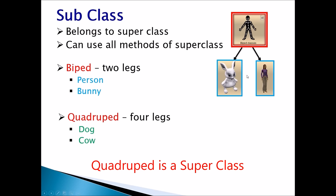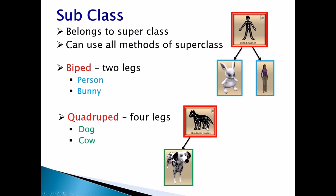Quadruped: Quadruped means any object which has four legs. For example, dog and cub.